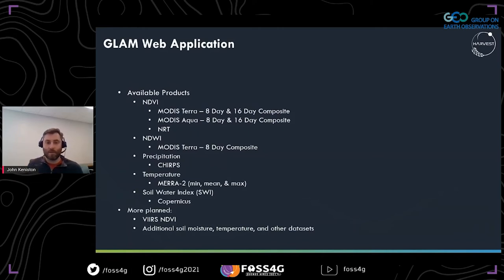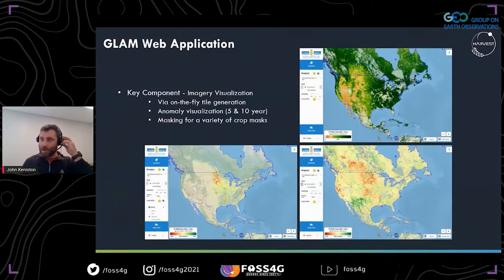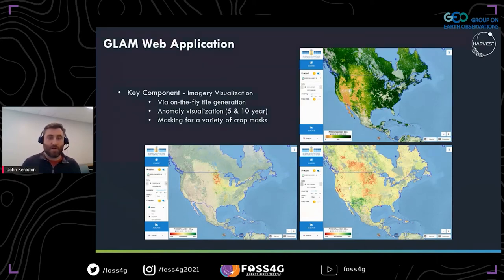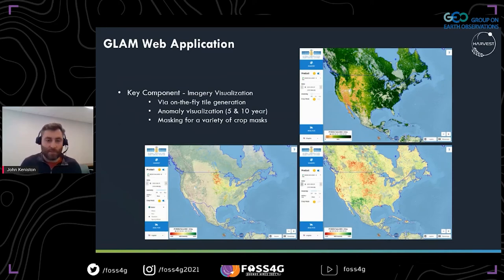We have multiple NDVI products from MODIS in near real-time, as well as NDWI from MODIS, CHIRPS precipitation, MERRA-2 temperature broken down into min, mean, and max, and soil water index. We're also planning on adding new datasets in the future — various NDVI products as the MODIS project nears end of life, plus additional soil moisture and temperature datasets. In the application you can easily view NDVI anomaly or anomaly for other products in five or ten year increments, and you can also apply crop masks — for example a soybean mask — to filter out all other data.